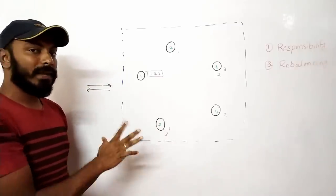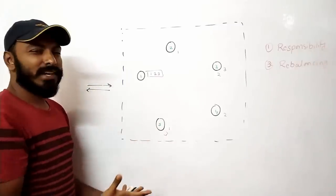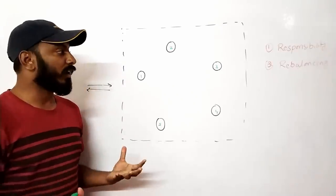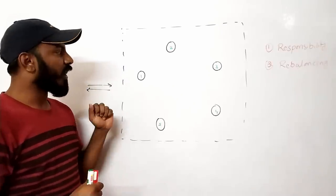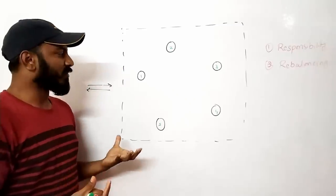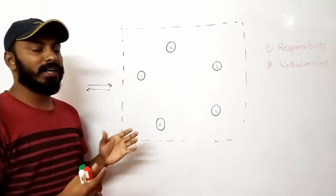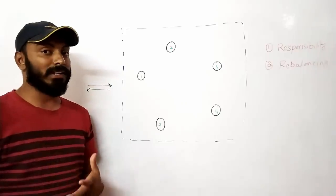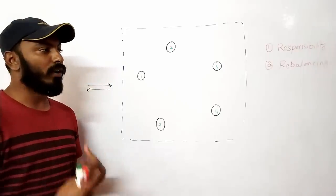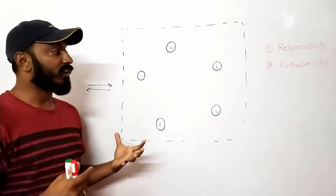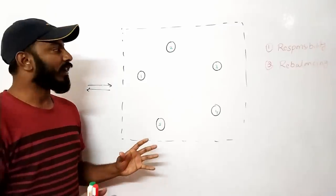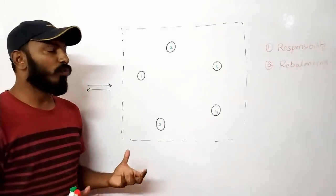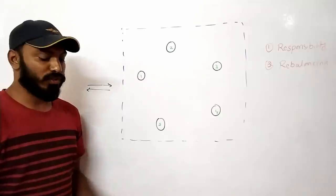So this is how primary and secondary responsibility is best explained. The second thing is rebalancing. How do these nodes know what their responsibility is — what part of the data should I save, or what part should I back up? To answer that, if you know consistent hashing, that is what plays a very important role.